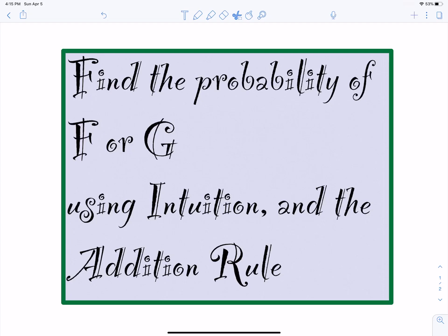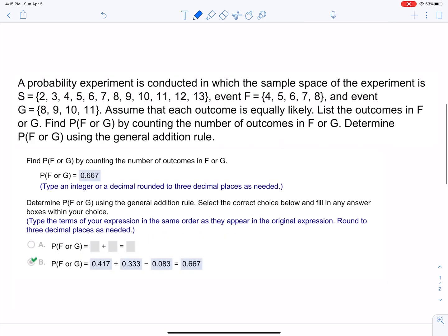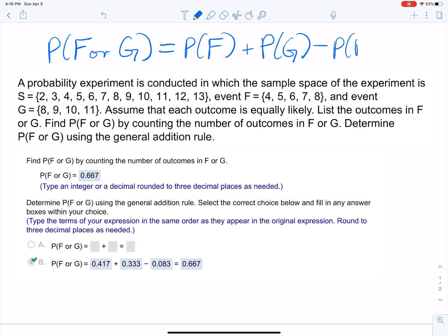I want to show you how to find the probability of F or G using intuition and the addition rule. The addition rule states that the probability of F or G equals the probability of F plus the probability of G minus the probability of F and G.